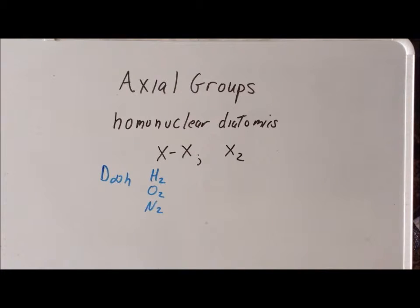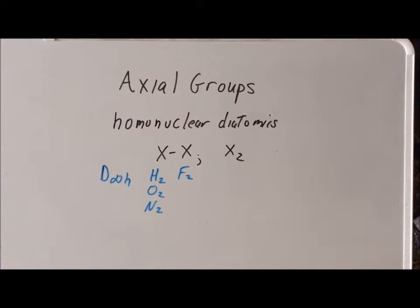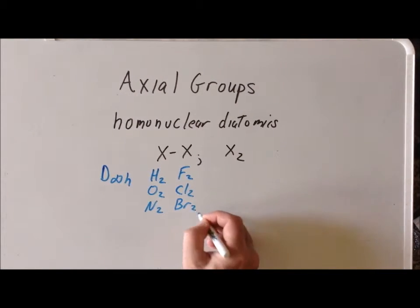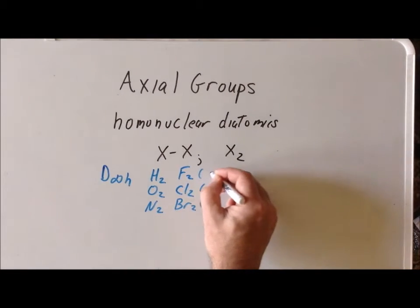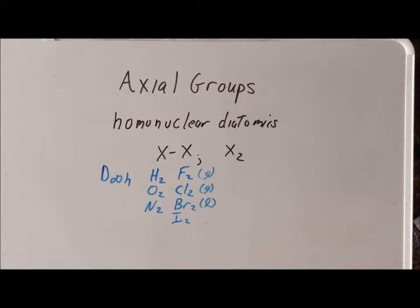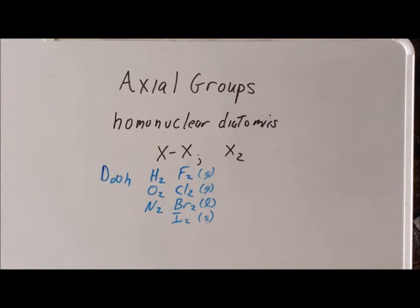All of the halogens are commonly found as homonuclear diatomics. We have F2, fluorine; Cl2, chlorine, which is a gas; Br2, bromine, which is a liquid; and I2, iodine, which is generally found as a purple solid. So the halogens span the range of states of matter from gases to liquid to solid, and they are all homonuclear diatomics belonging to the point group D∞h.